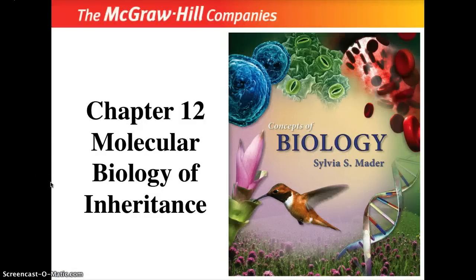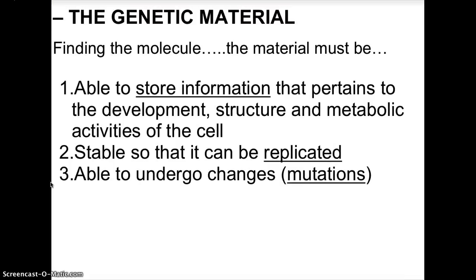Chapter 12: The Molecular Biology of Inheritance. This chapter explores the genetic material — finding the molecule that must be able to store information pertaining to the development, structure, and metabolic activities of the cell. It must be stable enough to be replicated and able to undergo changes called mutations. At this point we don't know what that genetic molecule is, but there is a race to discover it.